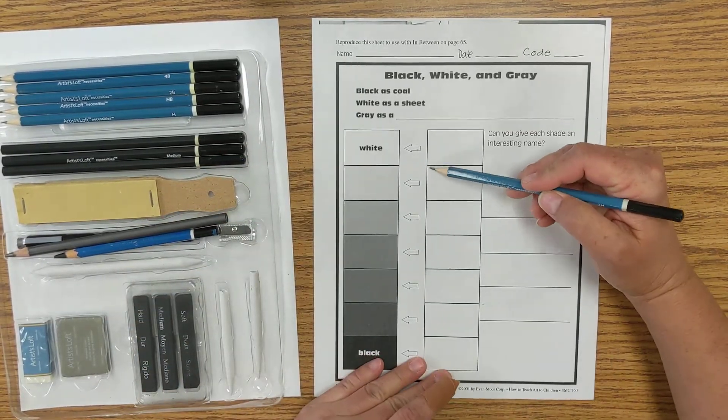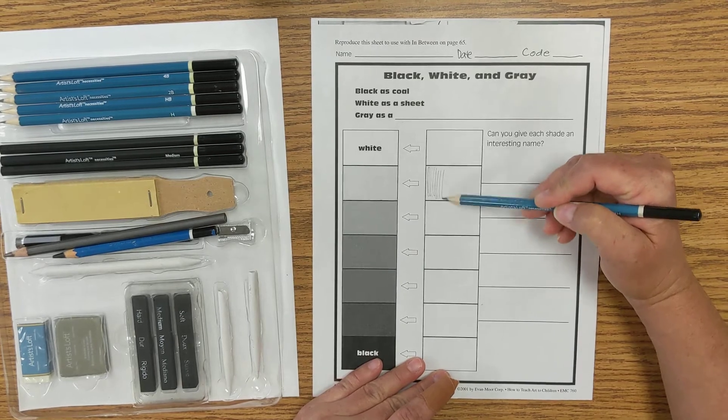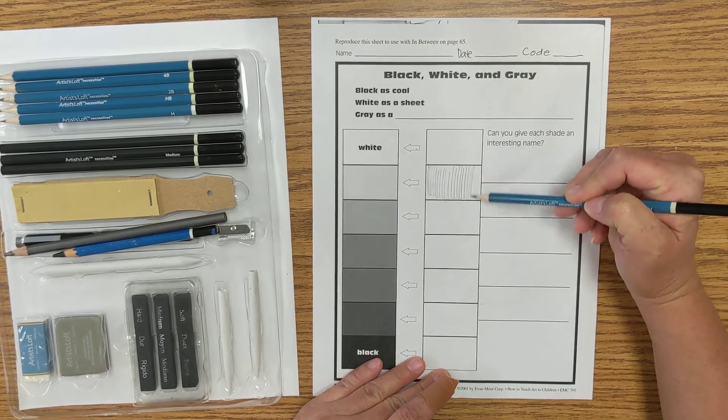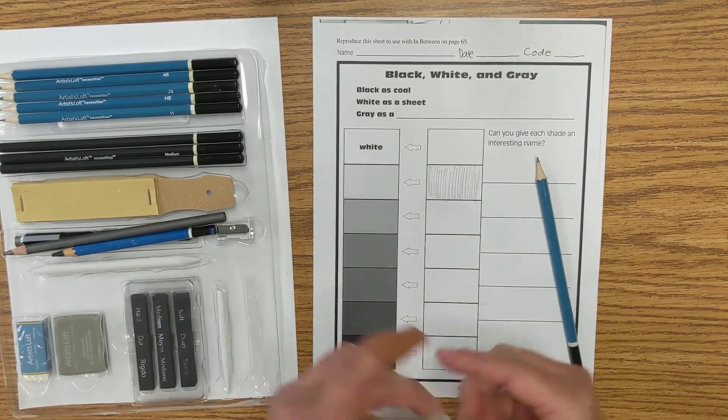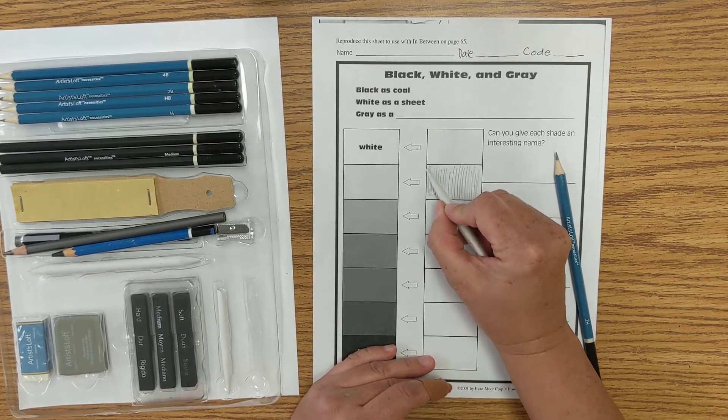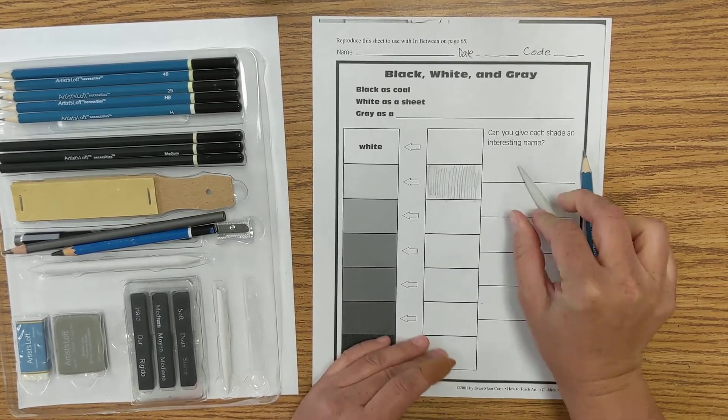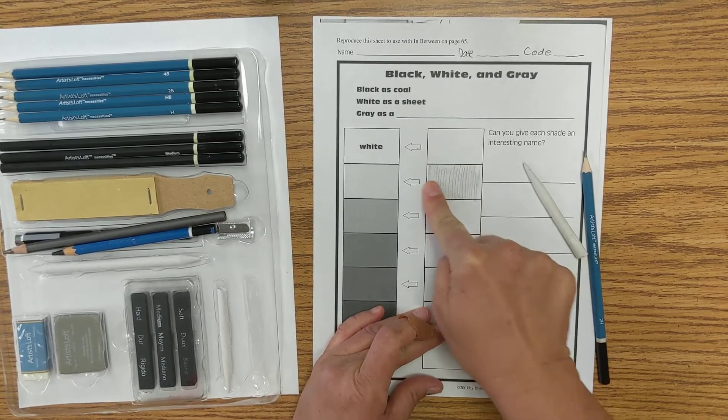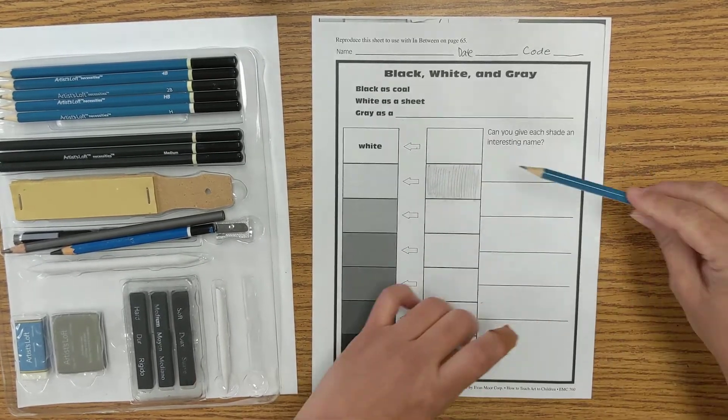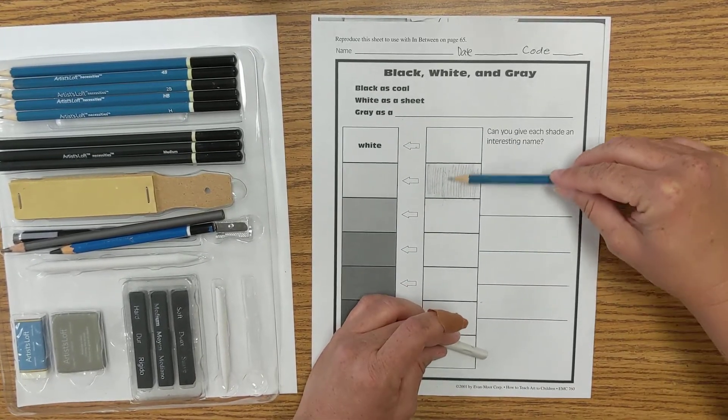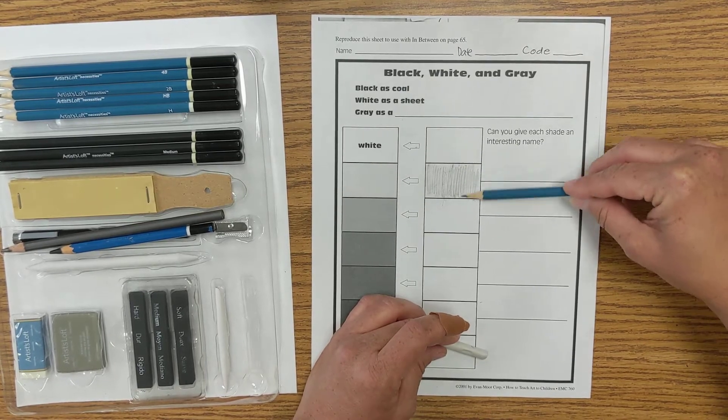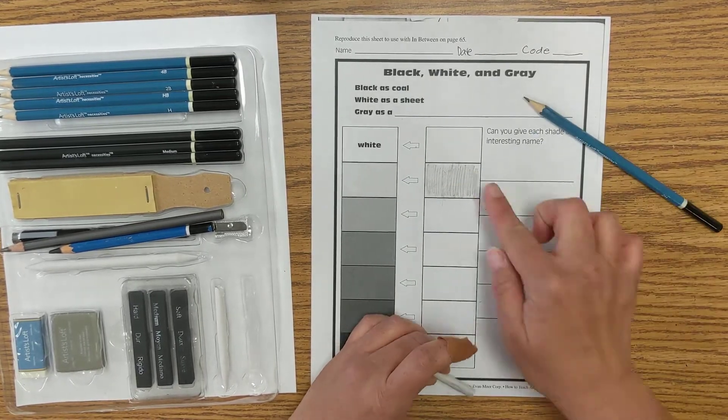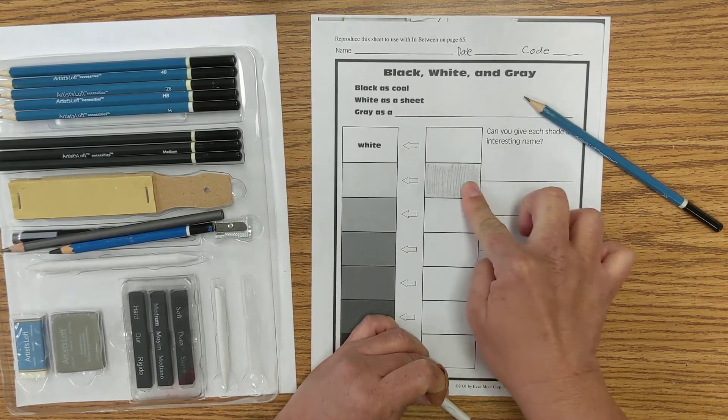I'm just going to lightly fill this in, and then I can use my blender to do that, or I can use my finger, or even a paper towel. I can use the side of the pencil if I want to add more to it. So this should be the lightest gray there is.